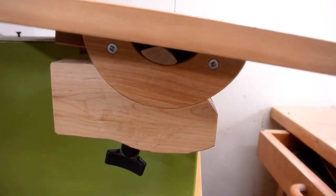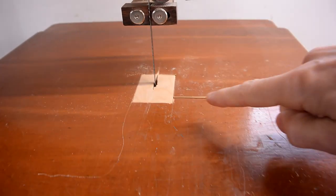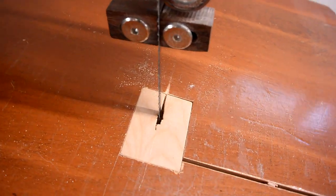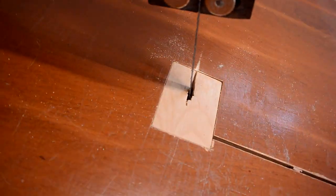These trunnions tilt the table at an axis that is aligned with the top of the table, so that when I tilt it, the slot stays in place with respect to the blade.